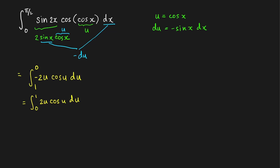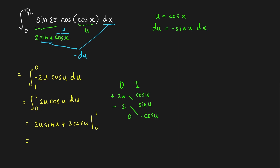We evaluate this using integration by parts — the tabular (DI) method. We have 2u and cos(u): derivatives column gives 2 then 0, integrals column gives sin(u) then −cos(u). Taking the alternating products, this equals 2u·sin(u) + 2·cos(u), evaluated from 0 to 1. This gives 2·sin(1) + 2·cos(1) minus (0 + 2), so the final answer is 2·sin(1) + 2·cos(1) − 2.